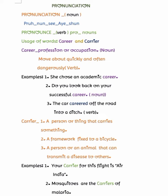The two words are c-a-r-e-e-r and c-a-r-r-i-e-r. Most of us make mistakes using these words in a sentence. 'Career' can be used as a noun and a verb. As a noun, it means a profession or occupation with opportunities for advancement or promotion. For example, you can say 'she chose an academic career.' Another example: 'Do you look back on a successful career?' — used as a noun.